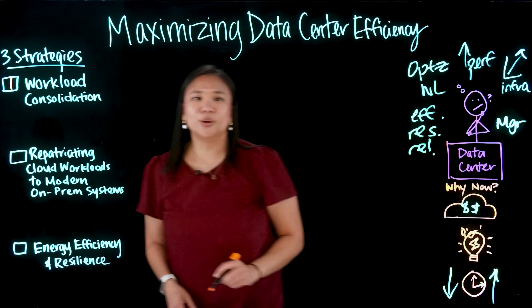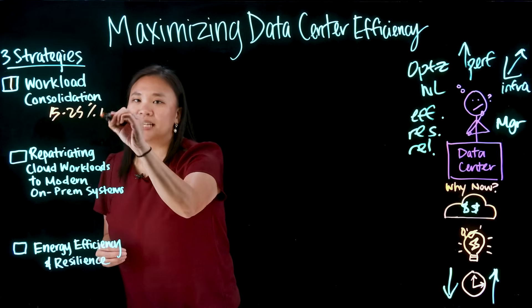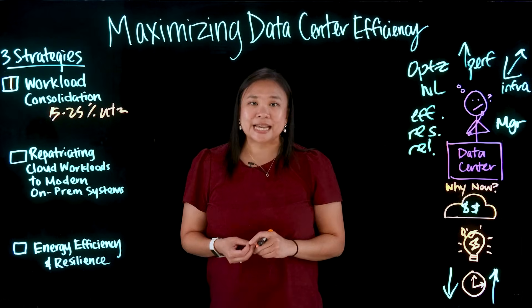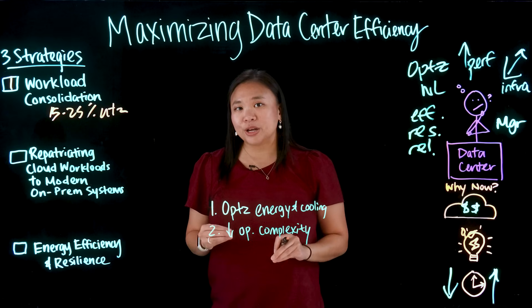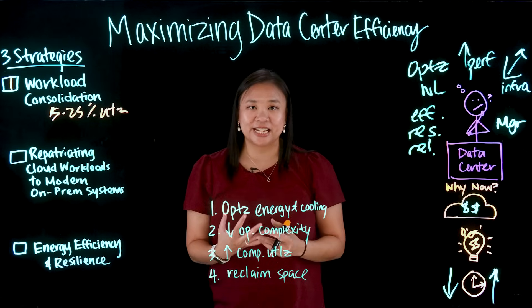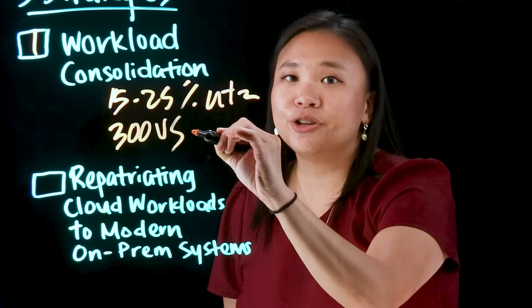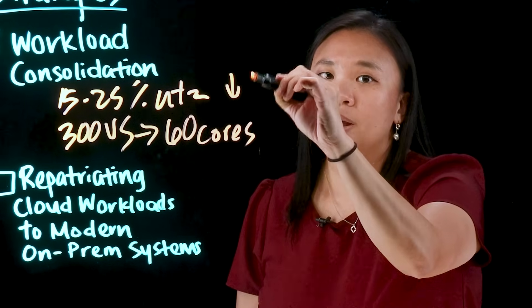Let's go through the first one: workload consolidation. In many environments, servers are operating at just 15 to 25% utilization. That is not a great number — if you hired 100 people and only 15 of them are working, they're not doing much for your money. It's wasting valuable compute power and energy resources. By consolidating workloads onto fewer high-performance systems, you can optimize energy and cooling efficiency, reduce operational complexity, and maximize compute utilization while reclaiming physical space in your data center. We have an example of a global retailer that optimized their infrastructure by consolidating 300 virtual servers into 60 physical cores, boosting performance while cutting power usage by 40%.